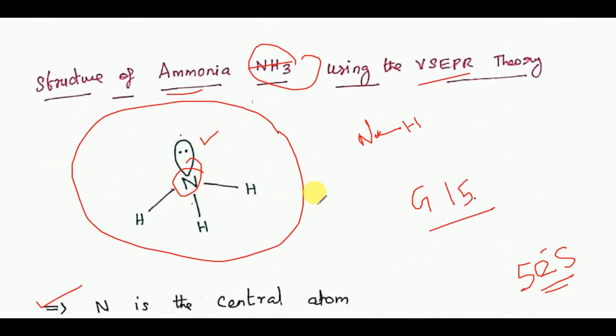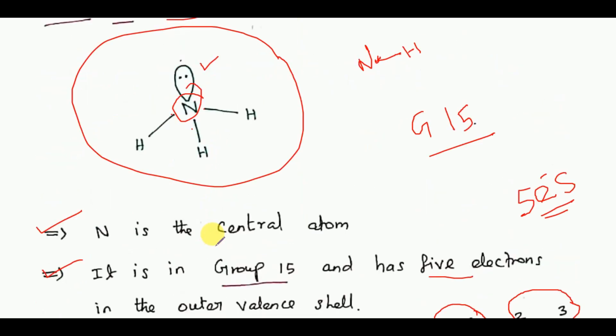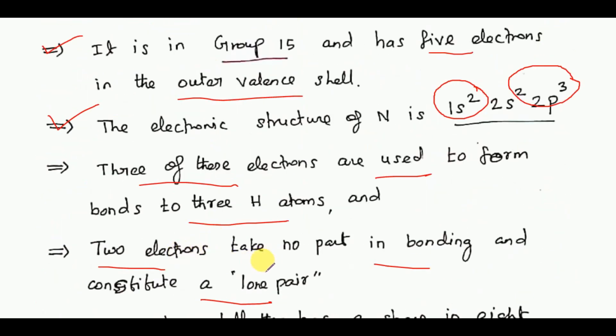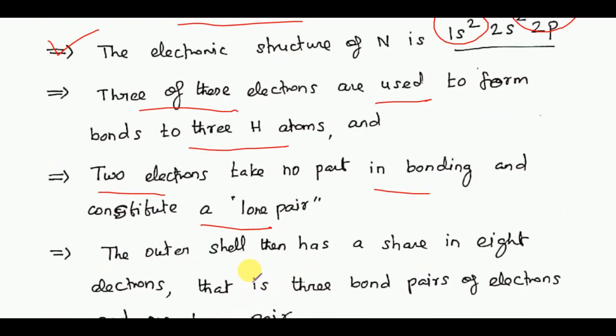Nitrogen has five outer shell electrons: three join with hydrogen to form three bonds, and the remaining two electrons form a lone pair without bonding.